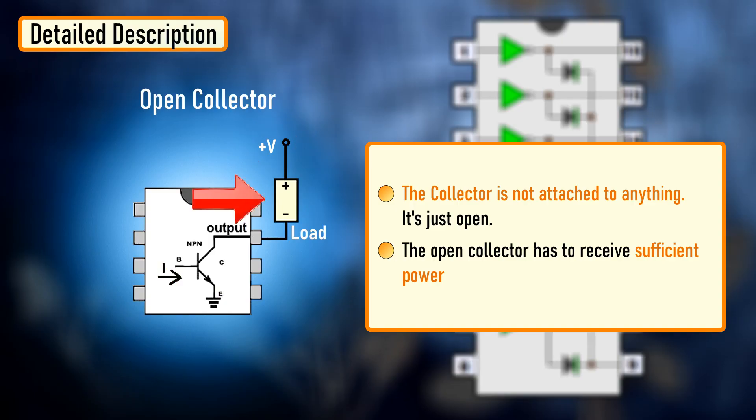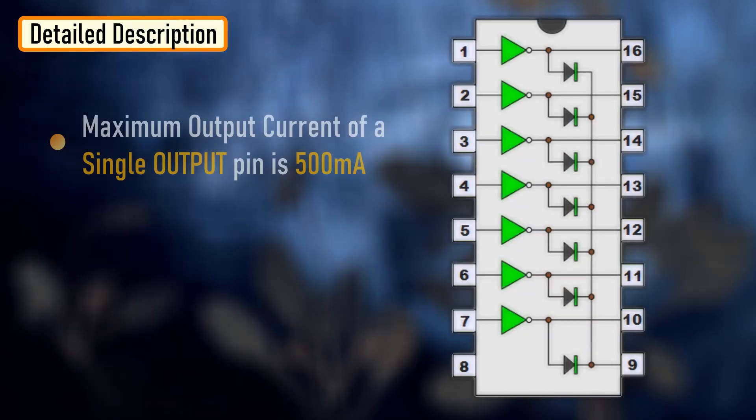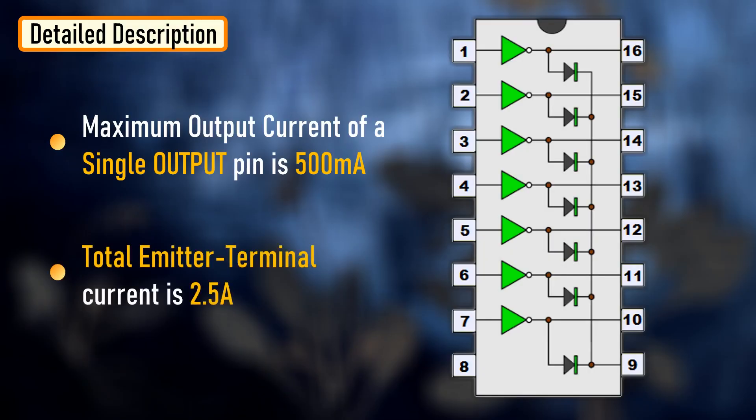So if you want to connect a load to the output of the chip with the open collector output, you must attach the load to a positive voltage source that is sufficient enough to drive the load. Hence, the positive side of the load connects to the positive voltage rail and the negative side connects to the output pin of the IC. Hence when the base current goes high, current flows from the collector to emitter and the output logic goes low, turning on the LED connected to the output pin of the IC and vice versa. The maximum output current of a single output pin is 500mA and the total emitter terminal current is 2.5A as per the datasheet.